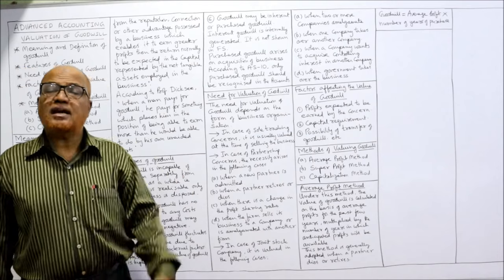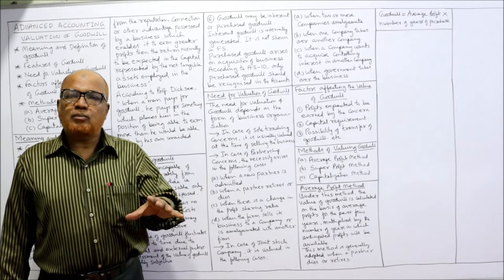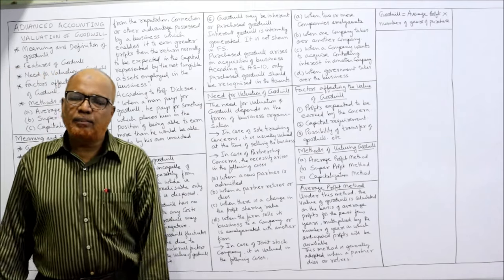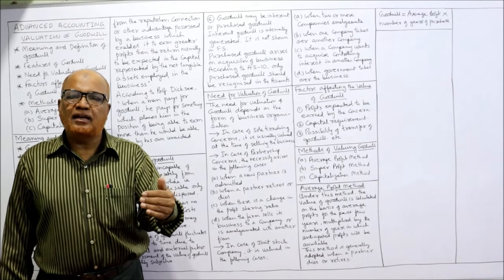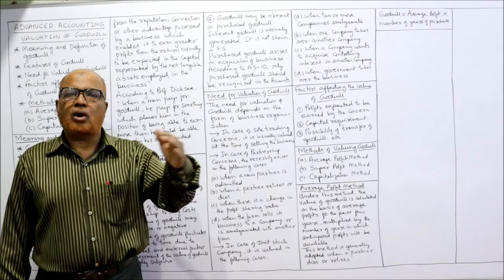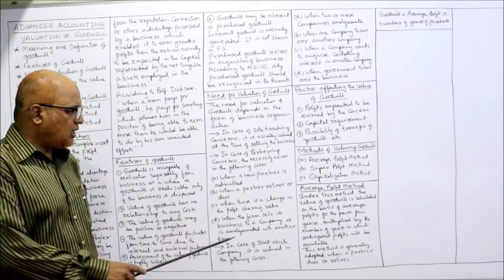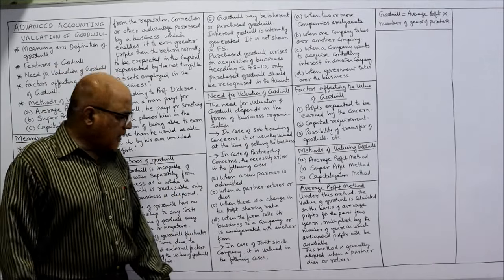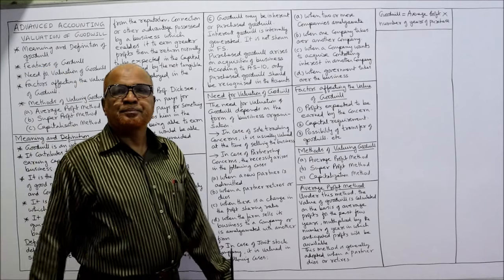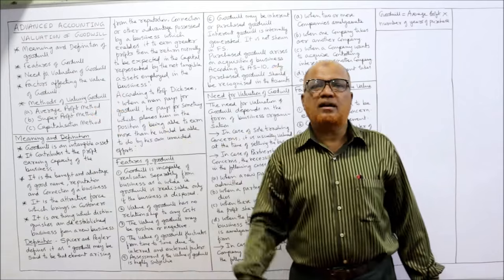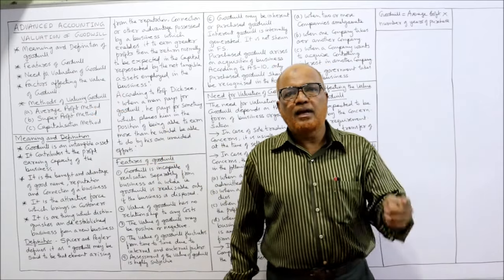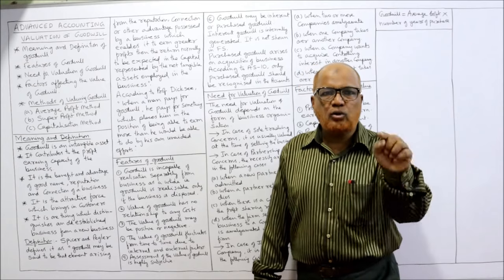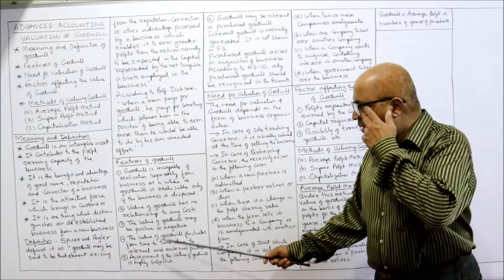In case of a partnership concern, the necessity arises in the following cases: first, when a new partner is admitted; second, when a partner retires or a partner dies; third, when there is a change in the profit-sharing ratio; and fourth, when the firm sells its business to another company, or two partnership firms merge together. These are the circumstances under which goodwill needs to be calculated in a partnership.